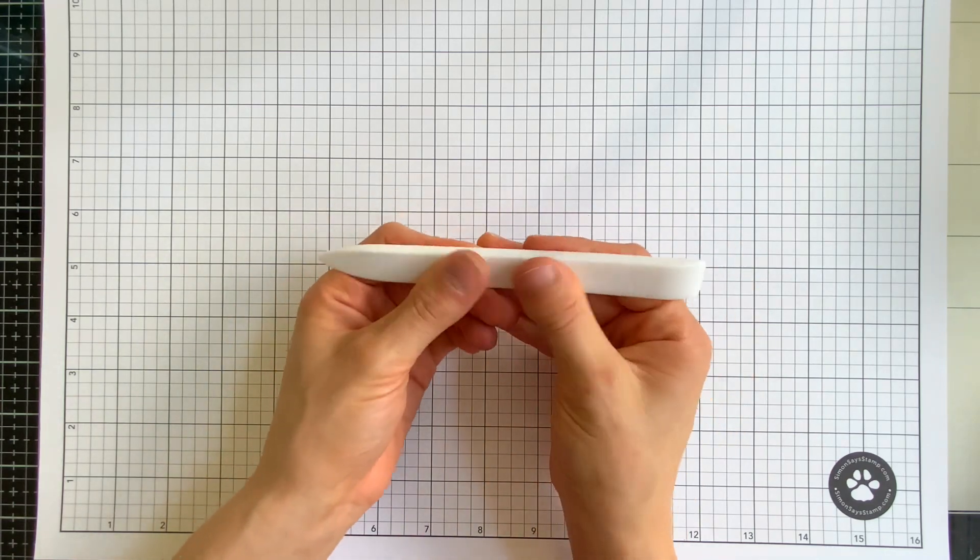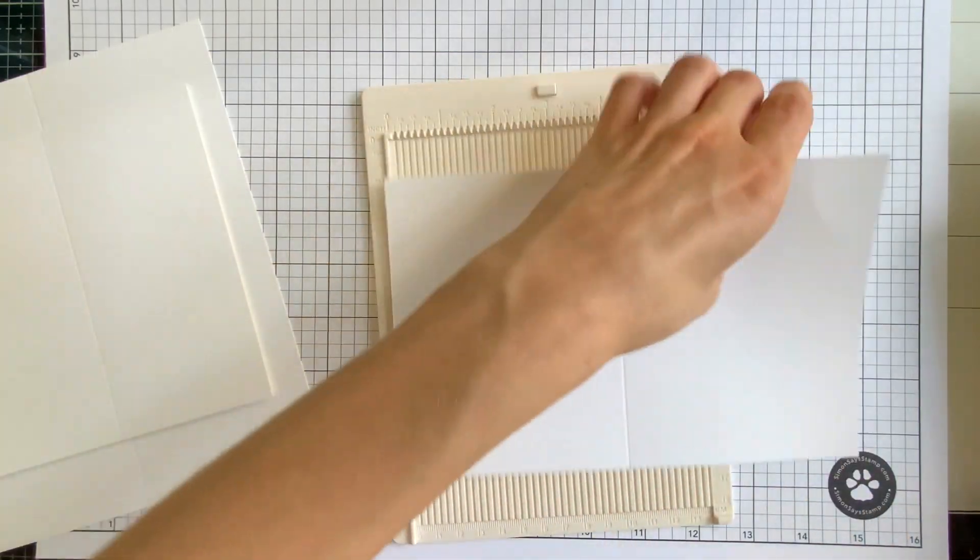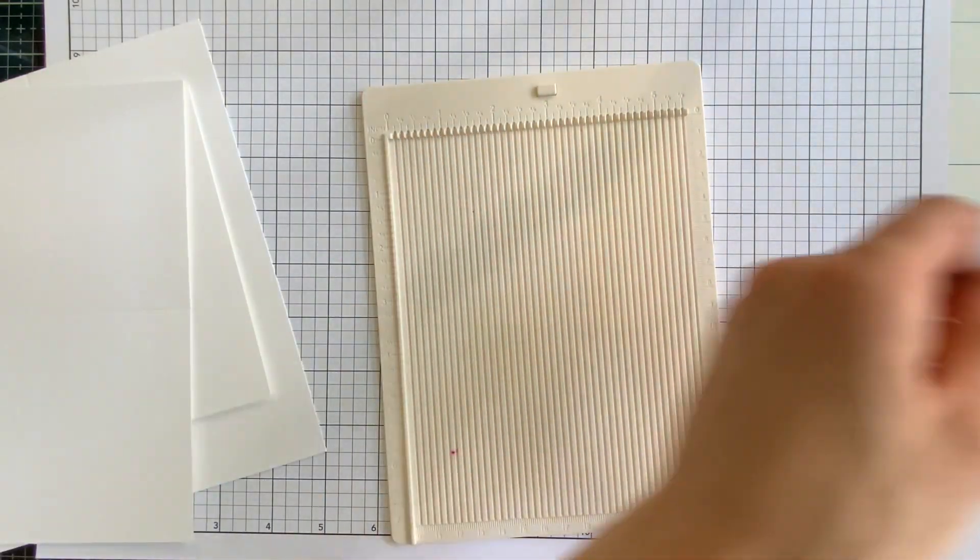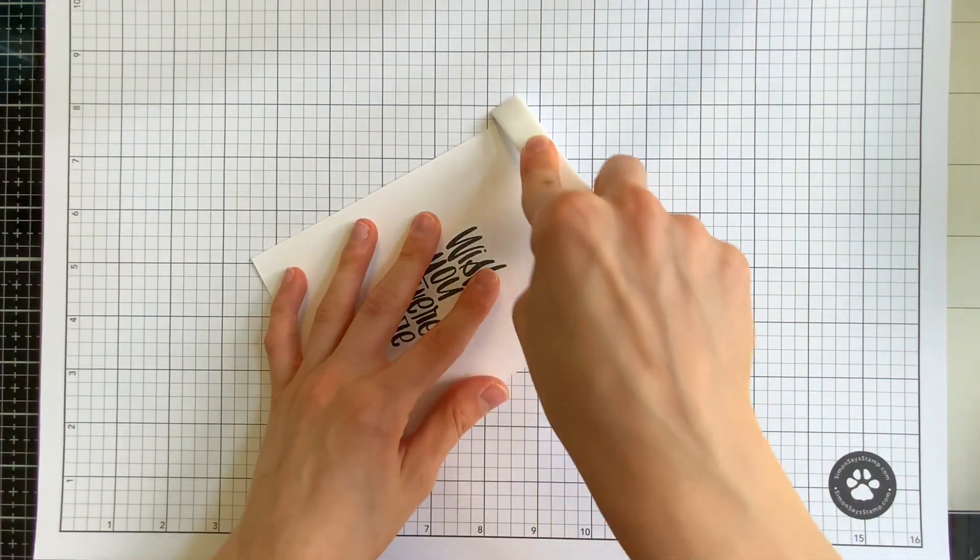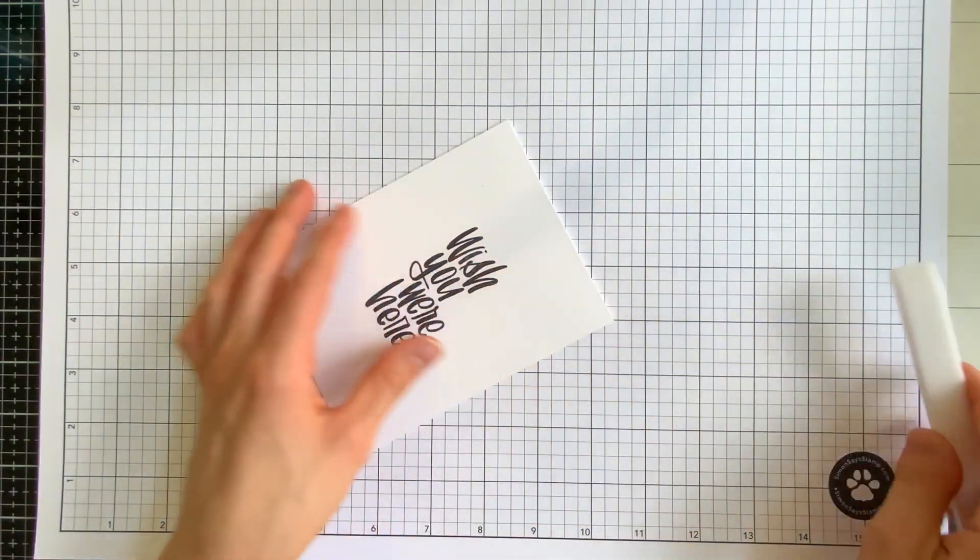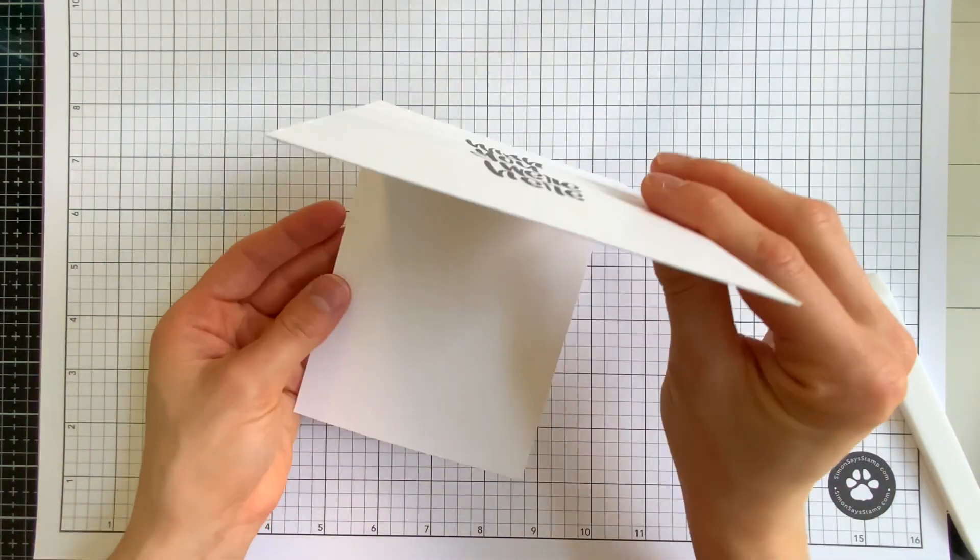A bone folder is extremely useful for when you're creasing and scoring paper. If you're scoring paper to fold you'll want to use the pointed end. When you're ready to crease the paper for a nice crisp edge along the fold, burnish the bone folder across your cardstock with either the side or the flat end.